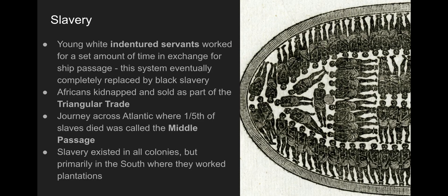The southern colonies in particular are going to need a labor force. This starts off as indentured servitude — people who work for a set amount of time in exchange for passage on a ship and help getting set up in the new world. These contracts were often five to seven years long and usually involved young white Europeans looking for opportunities they didn't have in the old country. However, this system is eventually completely replaced by a system of black African slavery. Africans were kidnapped and sold as part of the triangular trade between Europe, the colonies, and Africa. On the journey called the Middle Passage, about a fifth of them die. Slavery existed in all colonies, but primarily in the south because of the plantation economy.